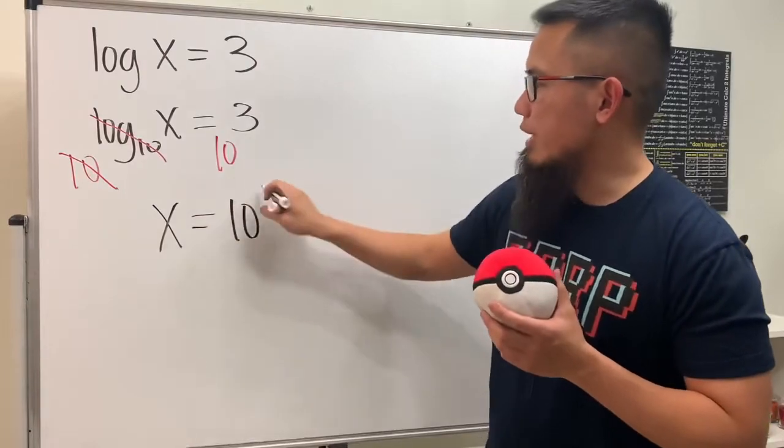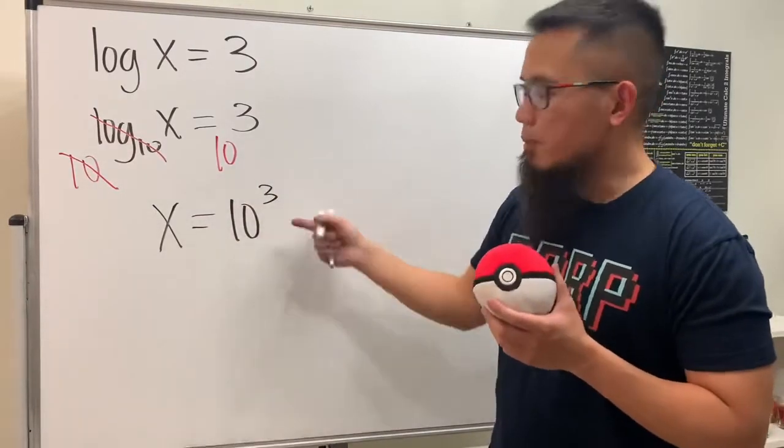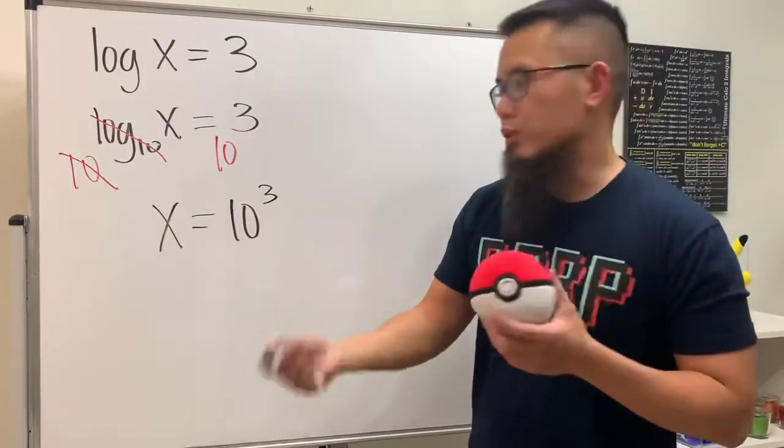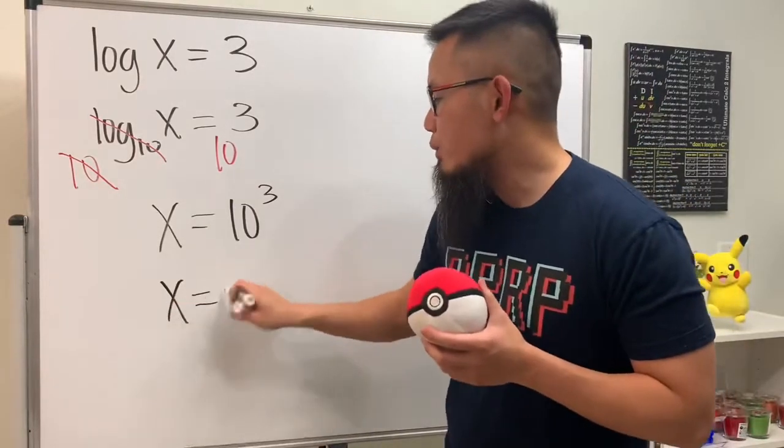10 to the third power means 10 times 10 times 10, so you get 1000. So x equals 1000.